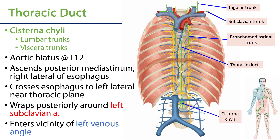The cisterna chyli is quite variable in size and origin. Typically it's in association with the second lumbar vertebra, and it's going to receive the lumbar trunks and various visceral trunks from the abdominal organs. It's a dilation of lymphoid tissue that is going to mark the origin of the thoracic duct.